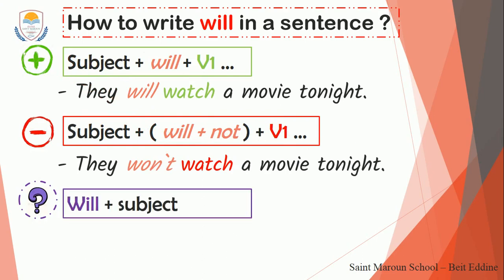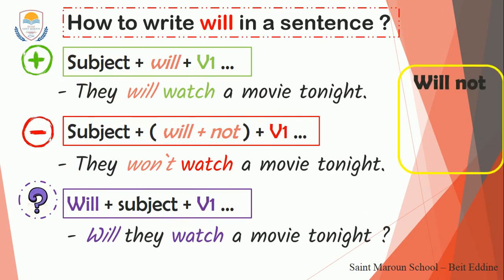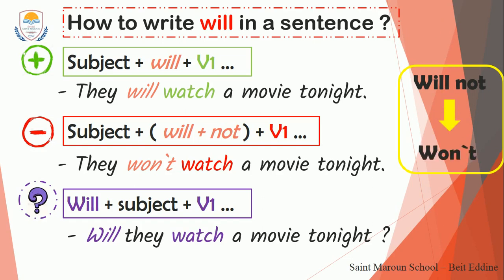And the question form is: 'will' plus subject, then verb one. Notice that I put 'will' at the beginning of the sentence. For example: 'Will they watch a movie tonight?' with a question mark. I want you to remember that 'will not' is the full form. The short form is 'won't', spelled W-O-N apostrophe T. 'Will not' = 'won't'.